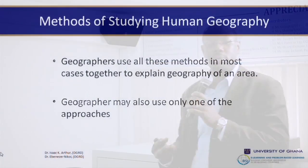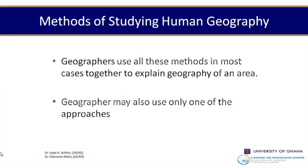Geographers use both methods together in most cases to explain a geographical phenomenon within an area, though they may also use just one. It depends on the phenomenon or what is at stake. There are certain questions or situations where one becomes the obvious choice, and there are also situations where you have to combine the two.